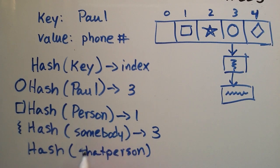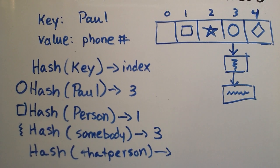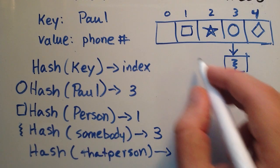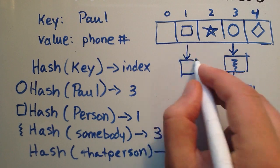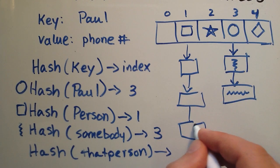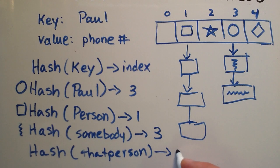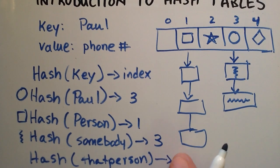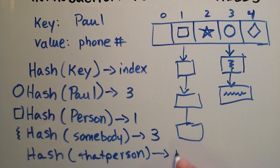And the hash function is going to basically spit out an index, and it's going to tell you exactly where that person is located. It might be that that person gets a hash value of one. Sorry, I meant to say one.